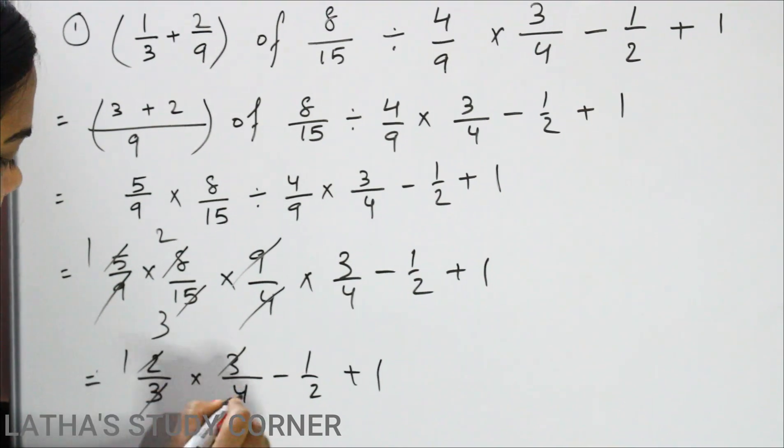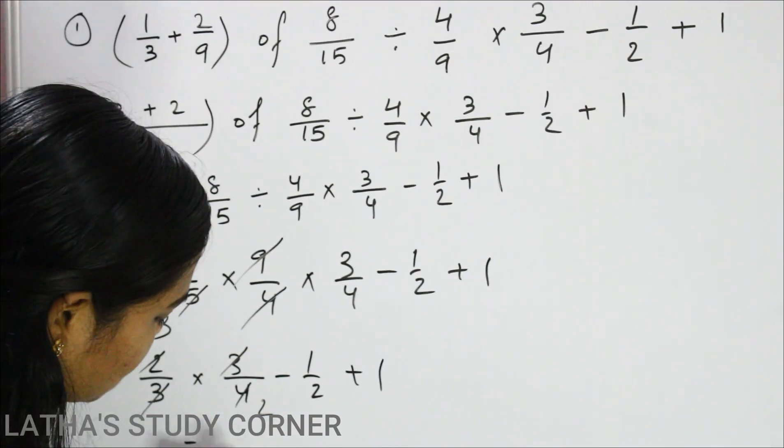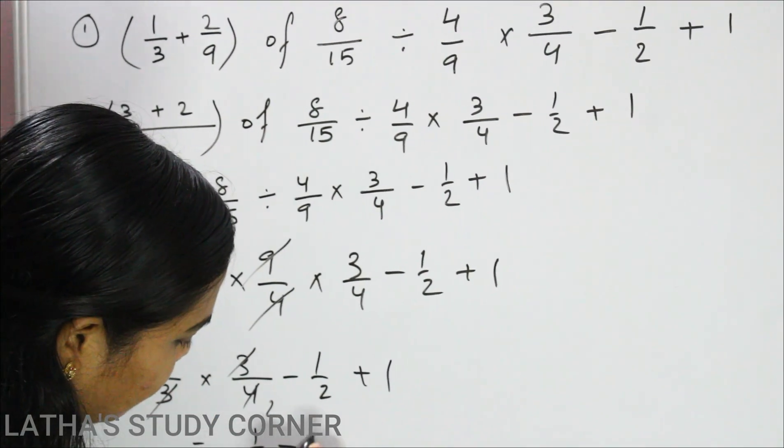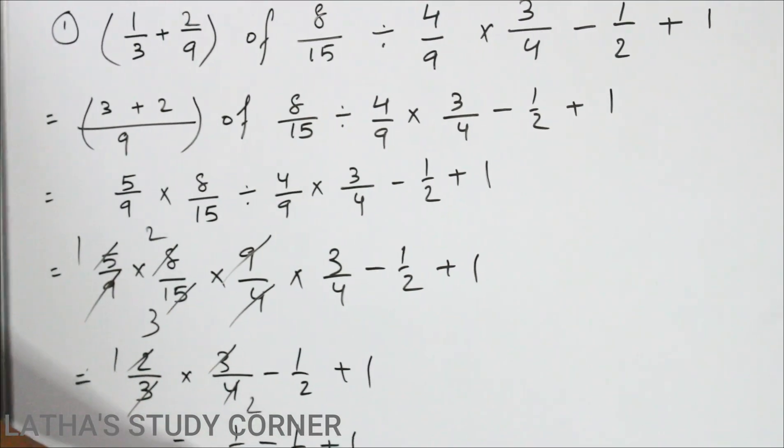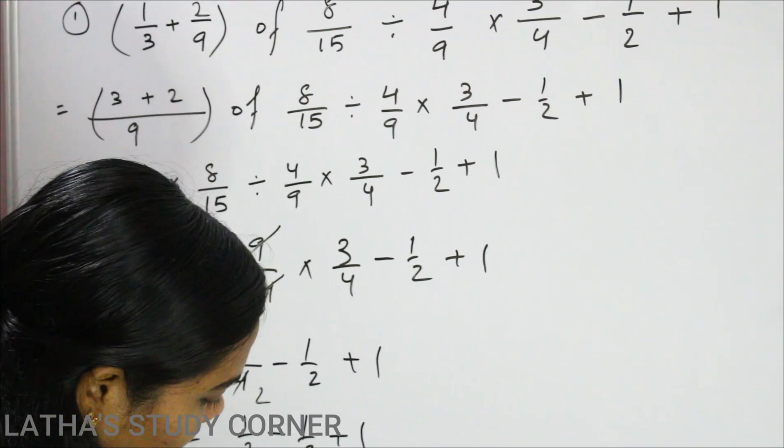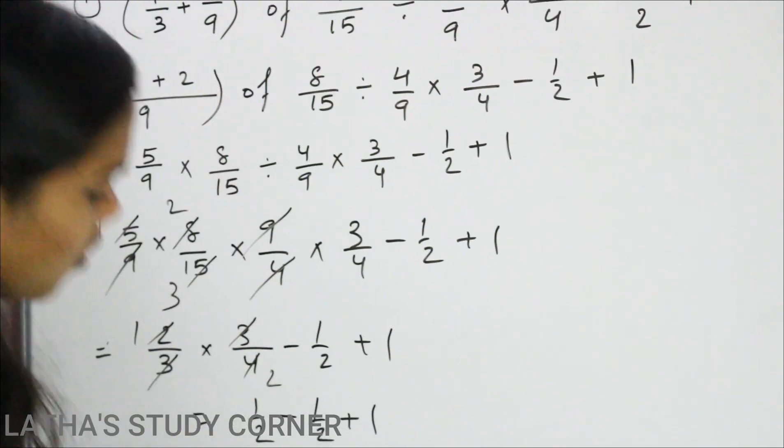Here 3, 3 cancel, 2 1 jar, 2 2 jar. So what is its value? 1 by 2 minus 1 by 2 plus 1. So half minus half that is 0 plus 1. So its value is 1.